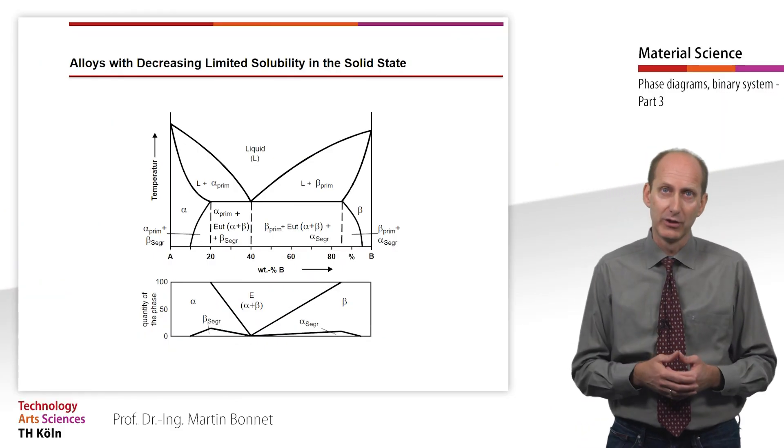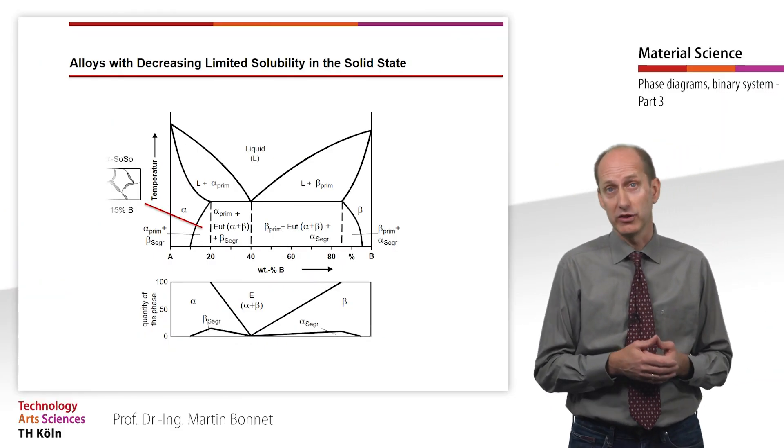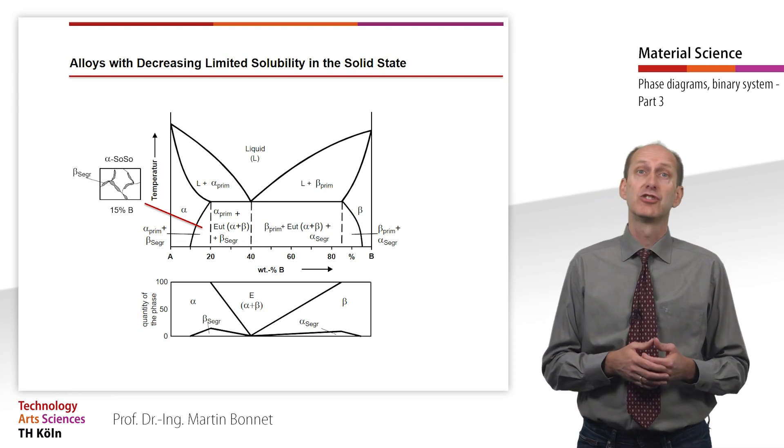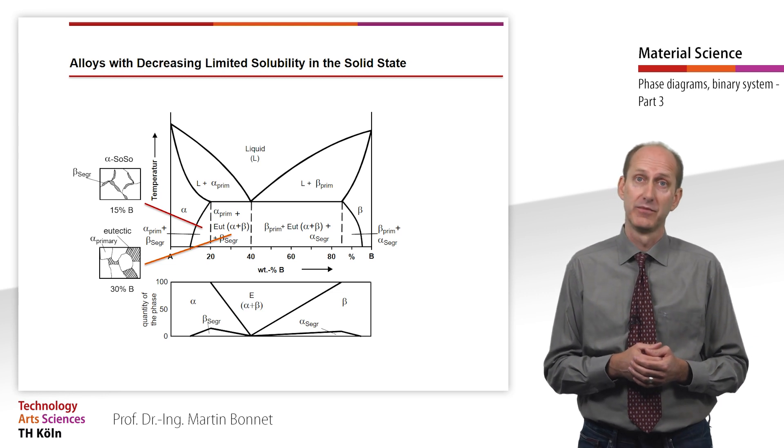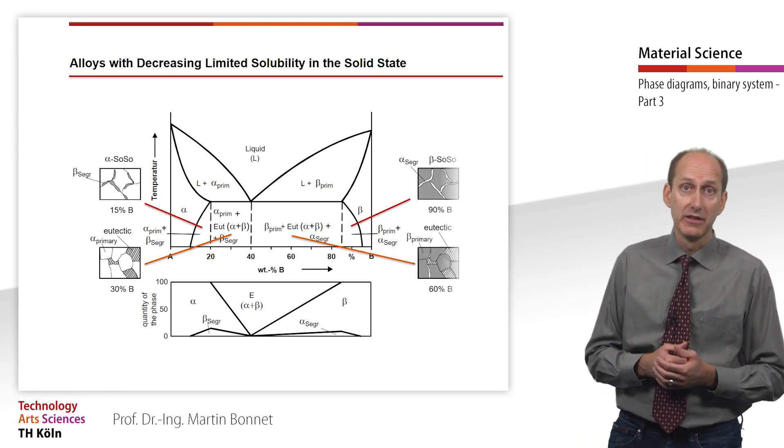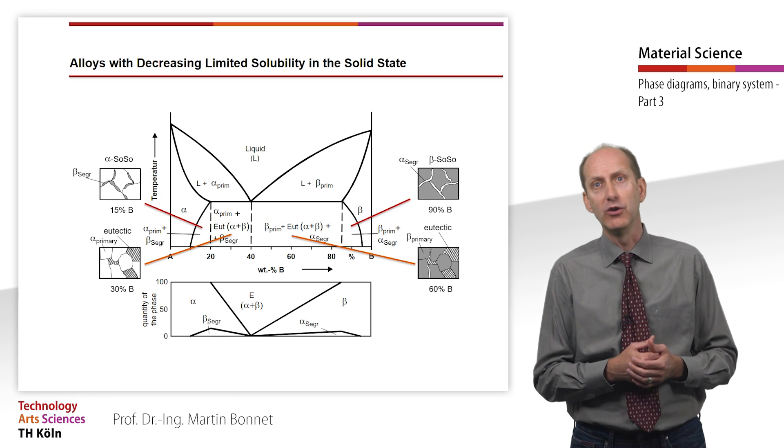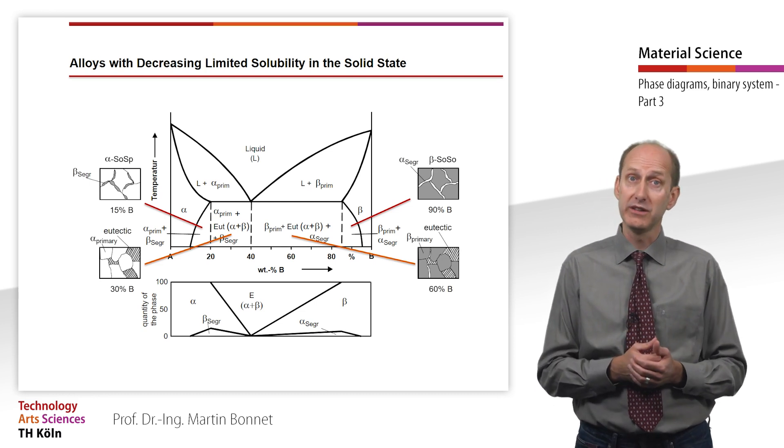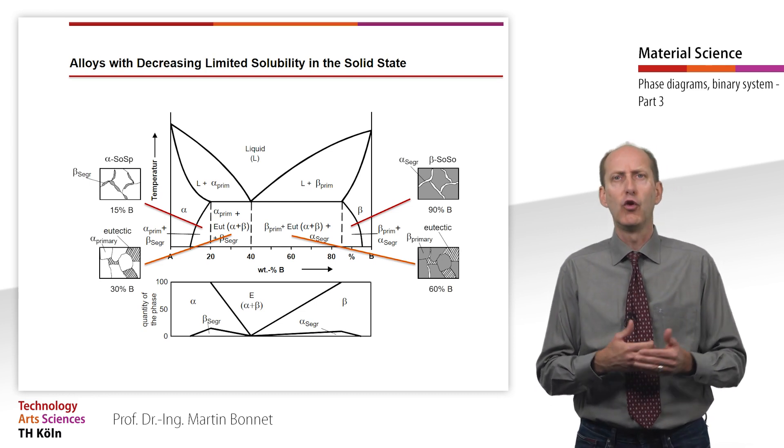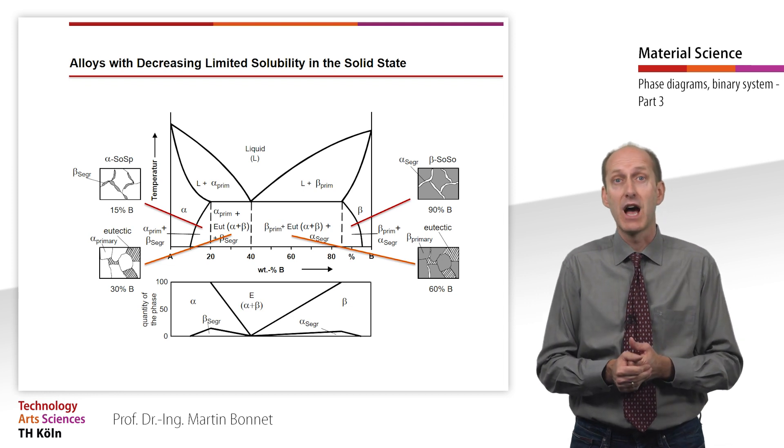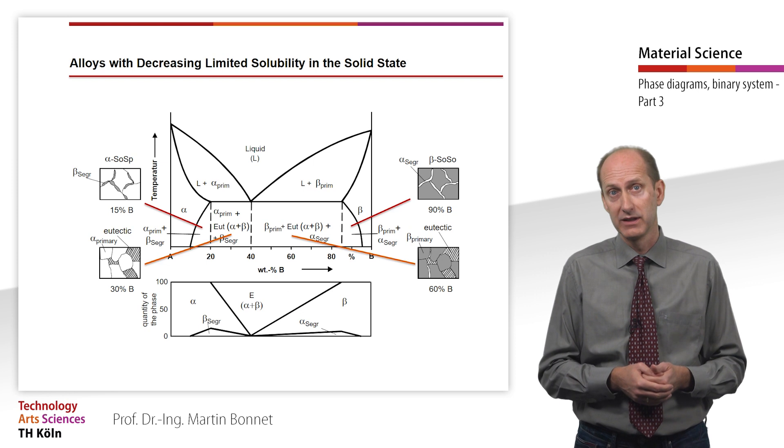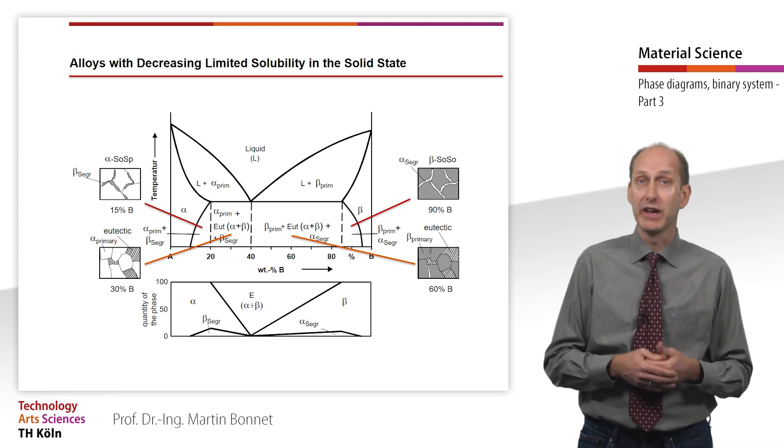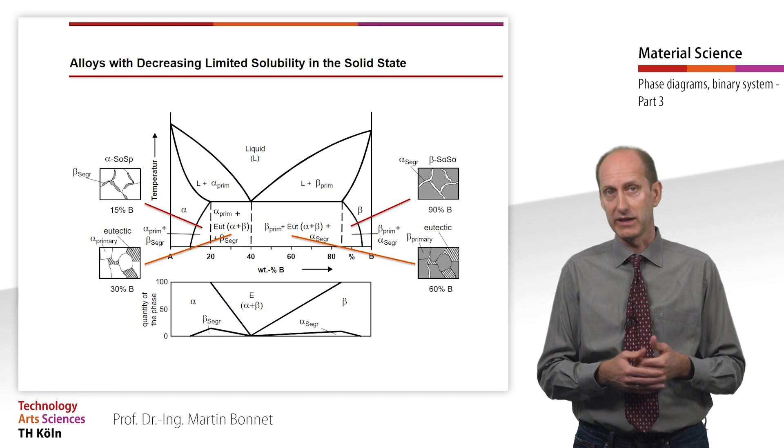Most alloys with limited solubility in the solid state, however, show an additional decrease in solubility at decreasing temperature. The component that precipitates out due to the decreasing solubility during cooling forms solid solutions that are precipitated out at the grain boundaries. These precipitations are called segregates or precipitates.